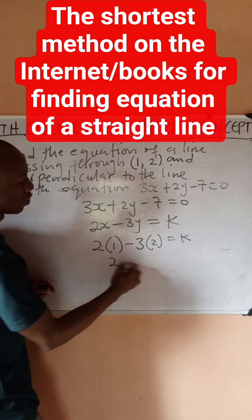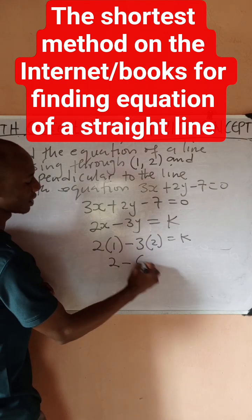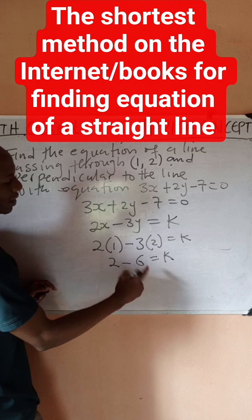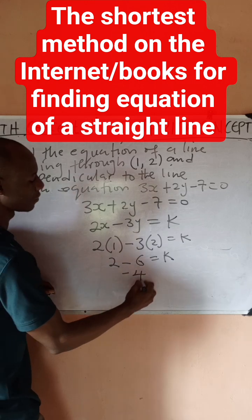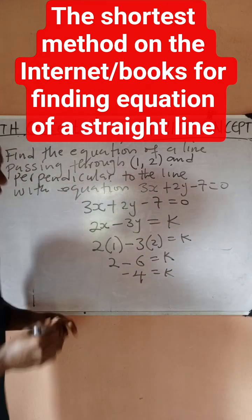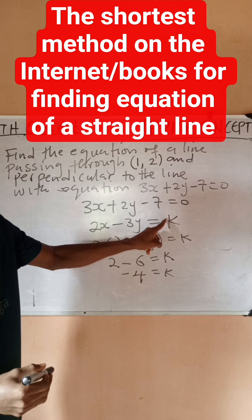So that 2 minus 6 is minus 4 equals k. Right, since we found k we can go back and substitute. Then we've gotten the equation of that line.